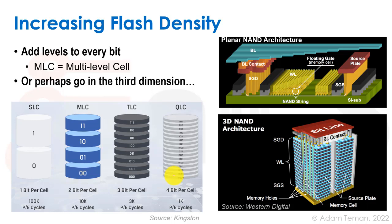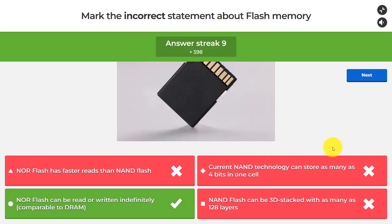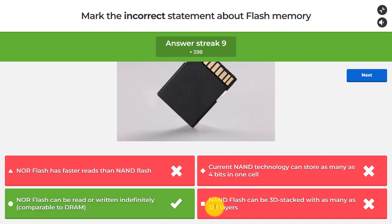Going from a planar architecture to 3D NAND, cells are built as pillars stacked vertically. Products already exist with 176 layers and the trend continues. These 3D NAND architectures have dramatically increased flash density, enabling terabyte-scale USB drives. The incorrect statement was that NOR flash can be read or written indefinitely — in reality both NOR and NAND flash have limited write endurance of several thousand program/erase cycles, requiring wear leveling in controllers.